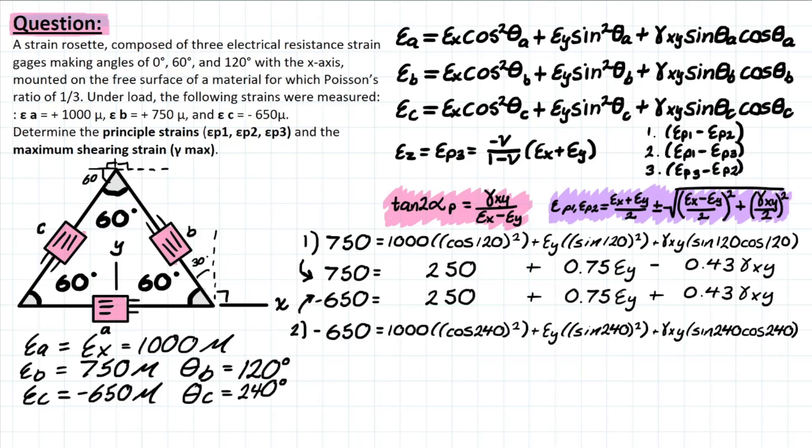So if you simply go ahead and add these two equations together, you're going to end up canceling this term. What does that mean for us? This means that we can actually now solve for what the value of epsilon_y is. So let's see what that looks like down here.